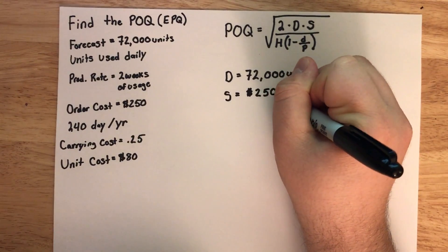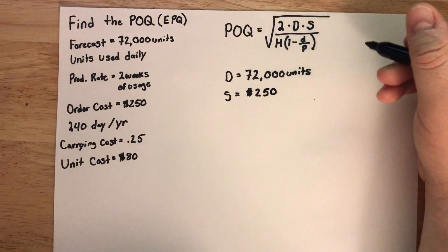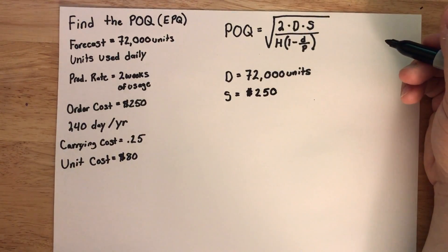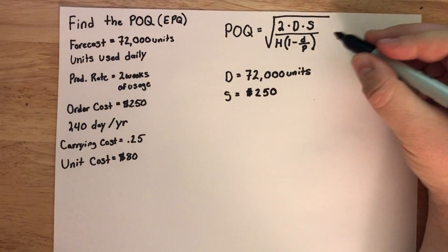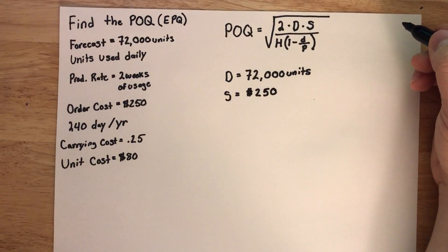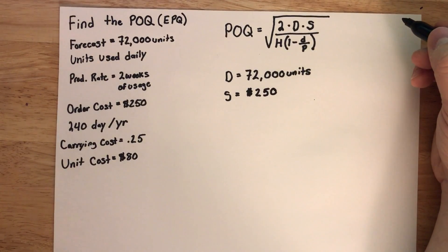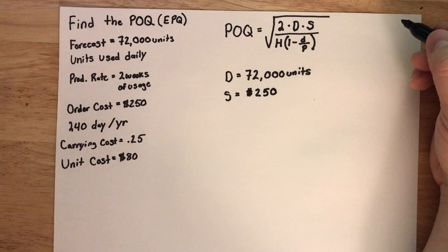I believe I just said that S was ordering cost per unit — that was misspoken on my part. S is the order cost per order. Remember, that is for every order that we place.